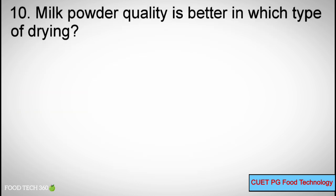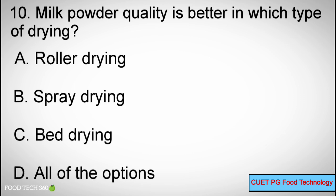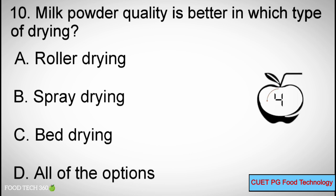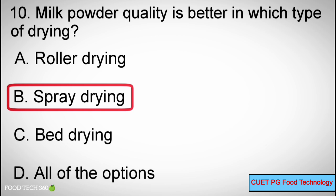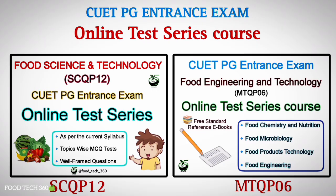Question number 10. Milk powder quality is better in which type of drying? Options A: Roller drying, B: Spray drying, C: Bed drying, D: All of the options. Correct answer: B, Spray drying.